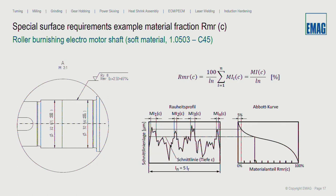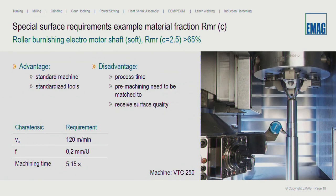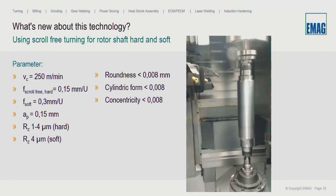Coming to bearing seats: the special requirement for bearing seats is very often the material fraction RMR. This means there are not that many peaks in the surface profile. These peaks can be reduced by a roller burnishing process. You can use a standard roller burnishing tool. After the finish turning process, you use this tool to flatten the peaks of the surface profile. With the scroll free turning process, you implement these two steps into one finish machining.